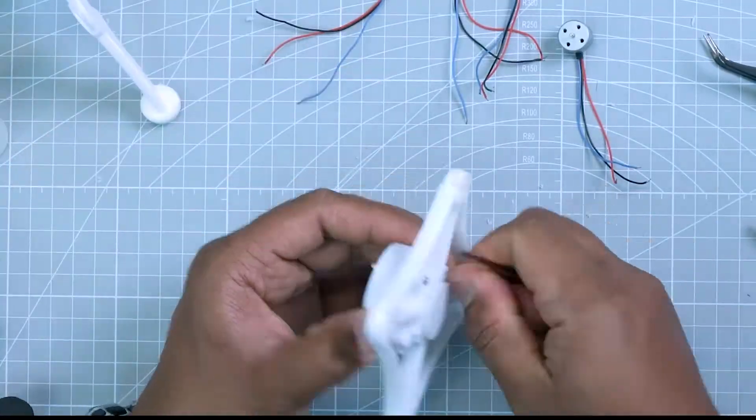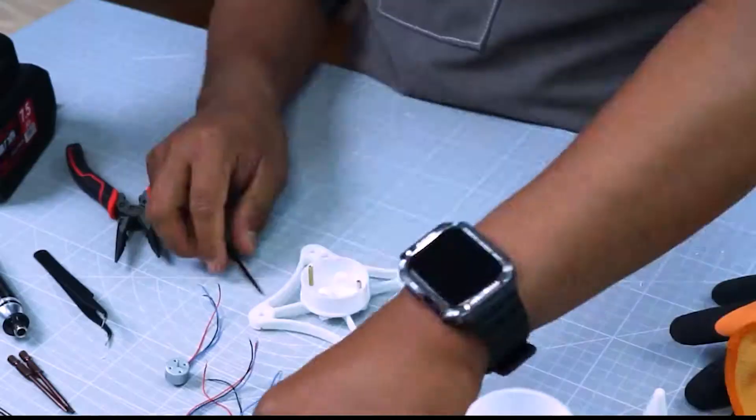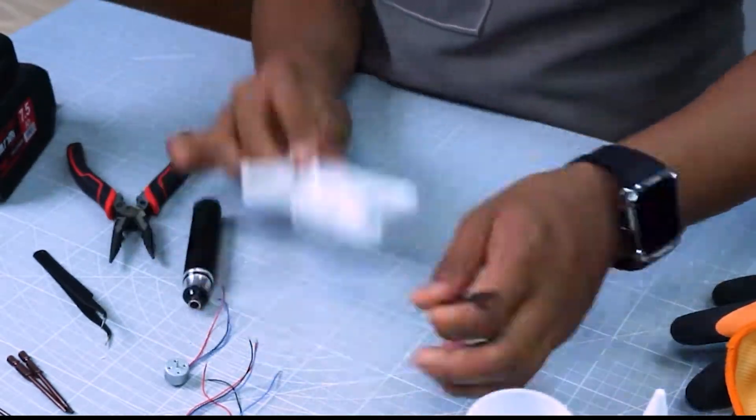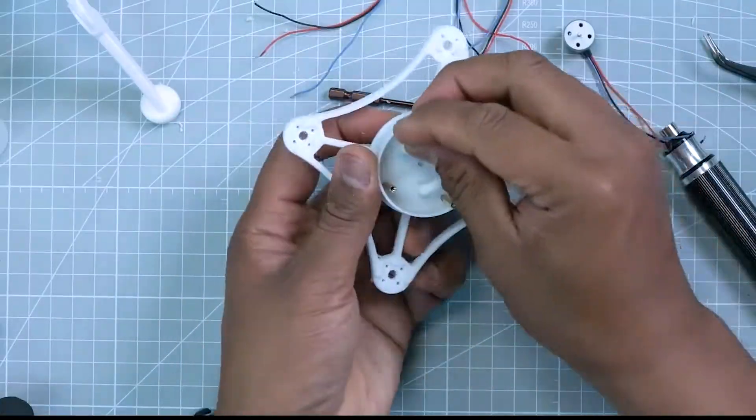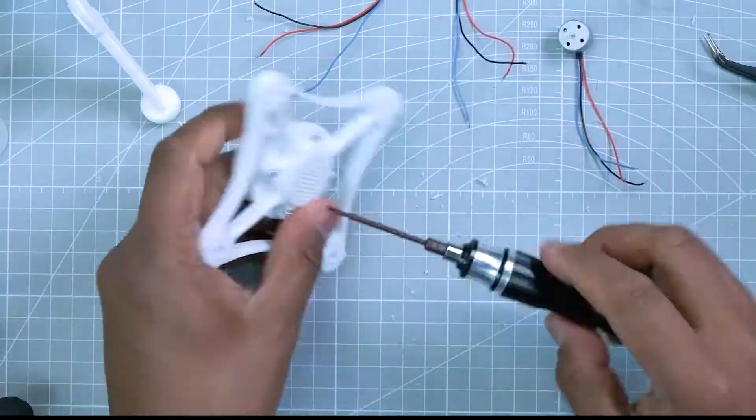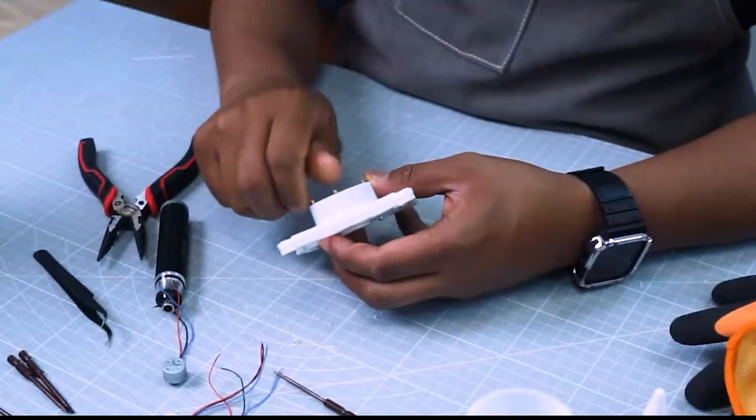You can use 2mm hex screwdriver to tighten the screws and long nose pliers for M2 female screws to counter the rotation of the screws.